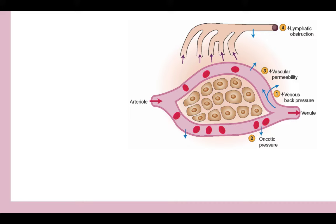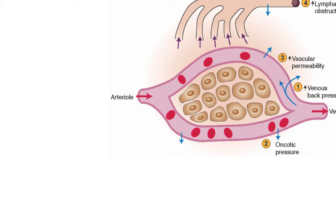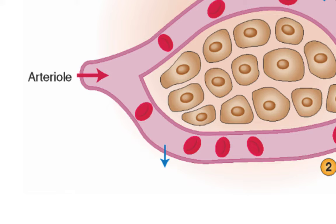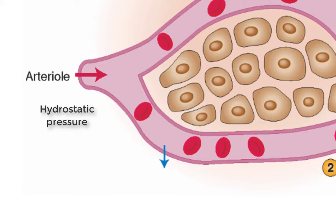There are two kinds of pressure that interact to maintain the intravascular space: hydrostatic pressure and oncotic pressure. Hydrostatic pressure is determined by the amount of water in the blood vessel. If fluid increases in the blood vessels for any reason, the hydrostatic pressure increases, and the extra water will pass to the tissue where there is less hydrostatic pressure, continuing until equilibrium is reached.